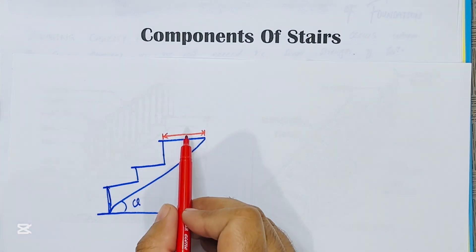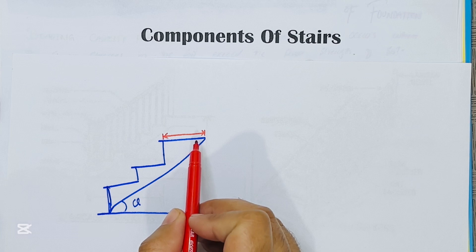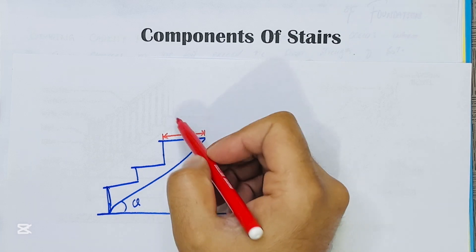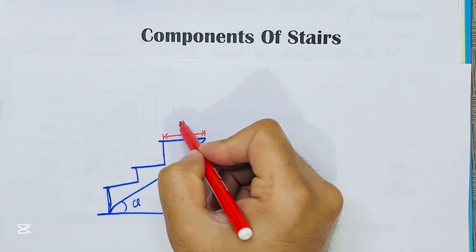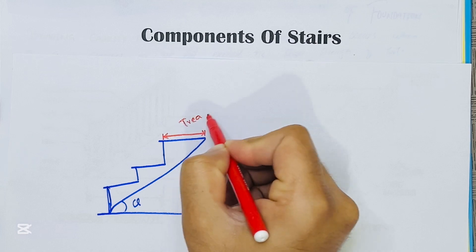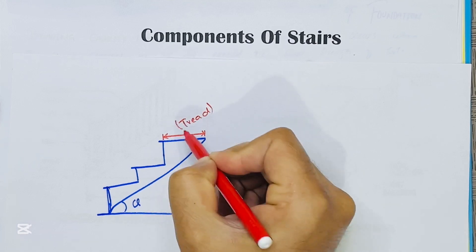The upper horizontal portion of the step over which the foot is placed during ascending or descending a stairway is known as tread — T-R-E-A-D. This is tread.